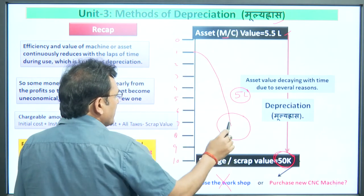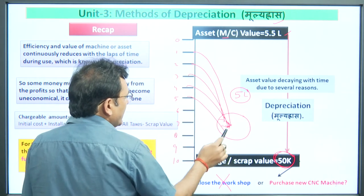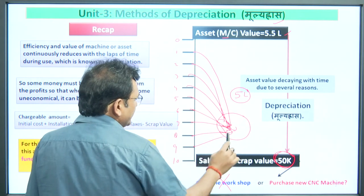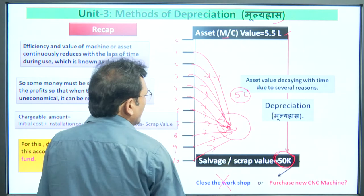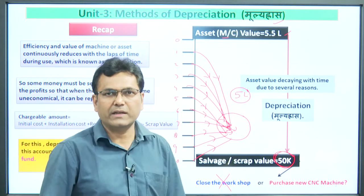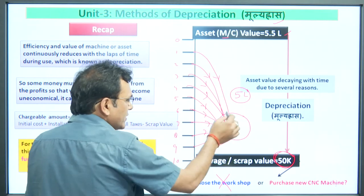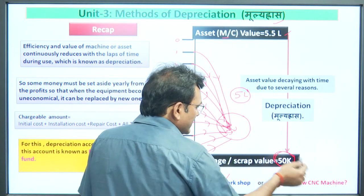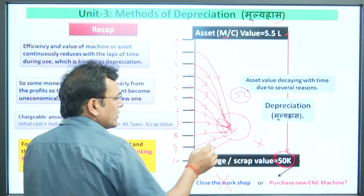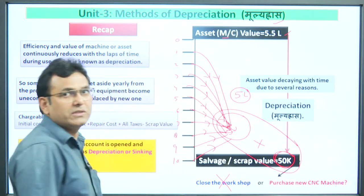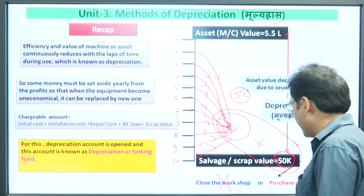At the end of each year, a certain amount should go into this bank account or savings fund. The analysis is about determining how much this amount should be. At the end of the tenth year, the accumulated fund amount plus the 50,000 scrap value together will give us a sufficient amount to purchase a new machine. Even if a little more is needed, our business will not have to close.